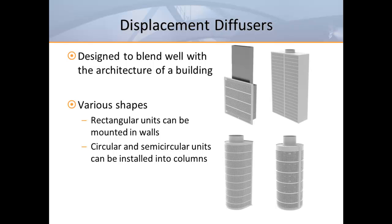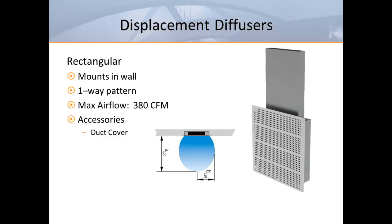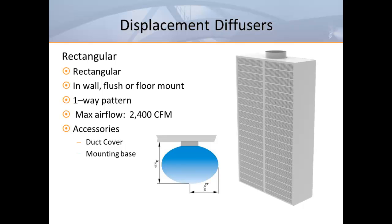This is a rectangular flush model designed to fit inside a wall, available in a variety of standard depths and face sizes — it creates a one-way air pattern. This unit is also rectangular but designed for either flush or floor mounting. It should be noted that all of these diffusers can be supplied from either above or below because it makes no difference to the air pattern or performance. This unit also provides a one-way air pattern.